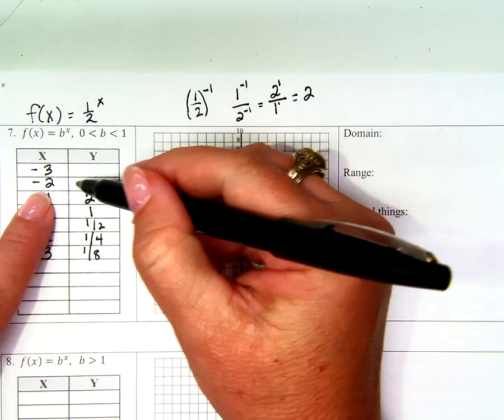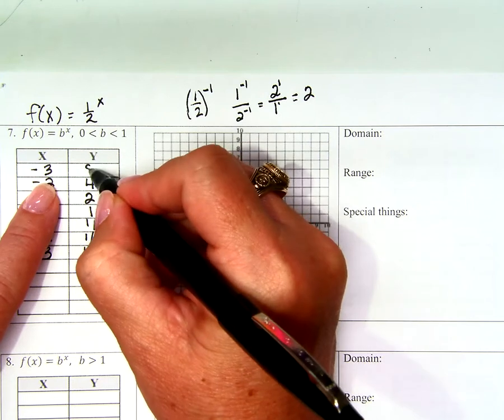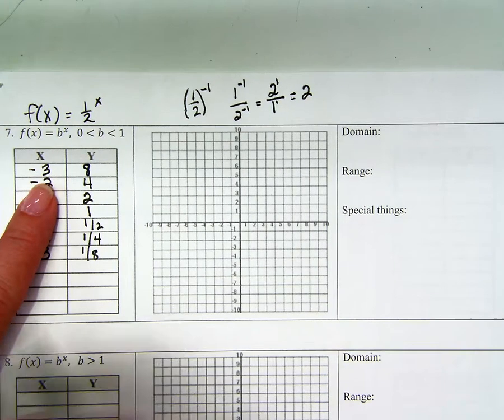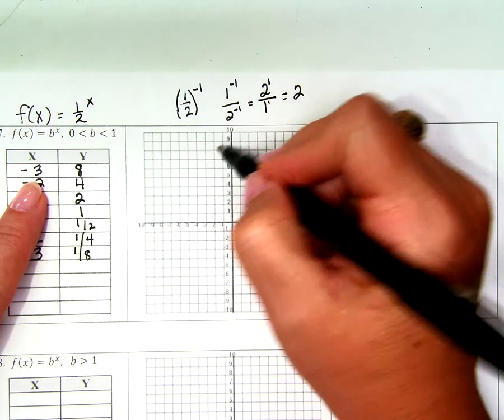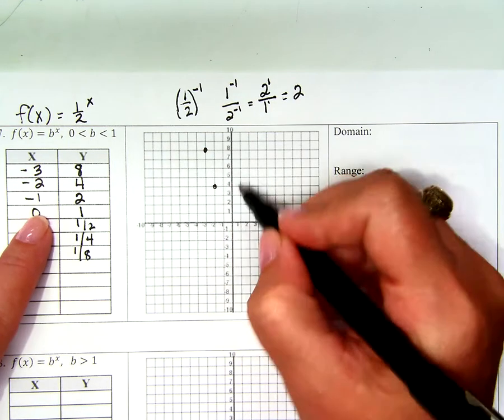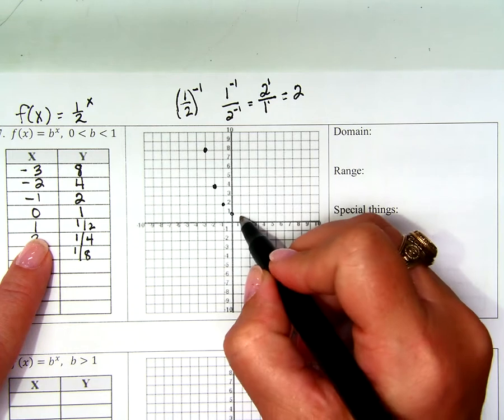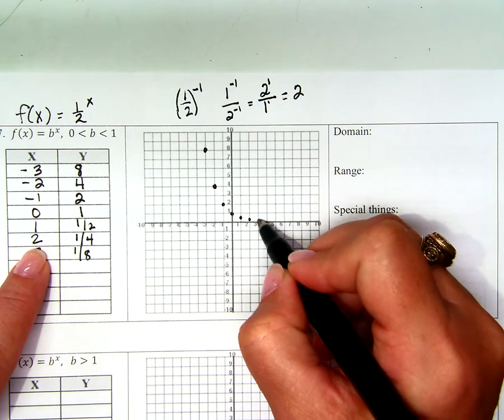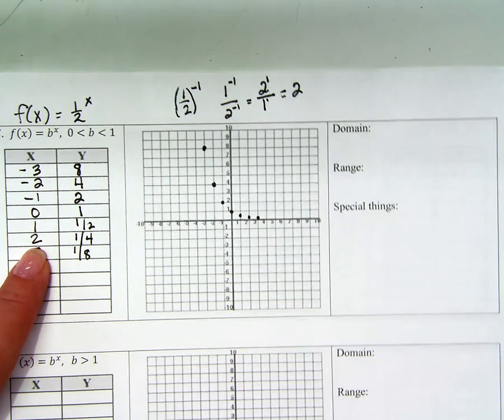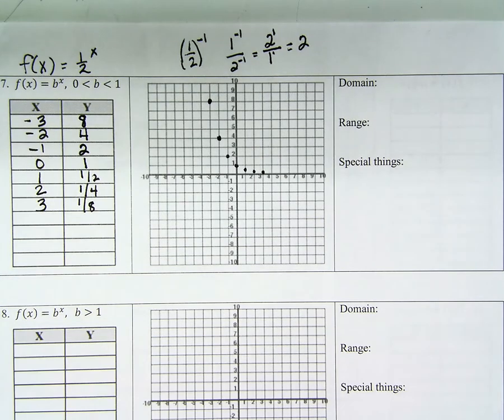So what do you think negative 2 is going to be? 4, and what about negative 3? 8. So let me plot that real fast for you, and if you haven't plotted it, go ahead and plot it now. Does yours look like that? It should if it doesn't. Can I connect them? How do you know?